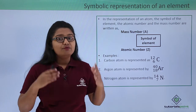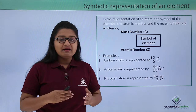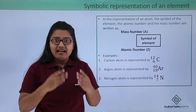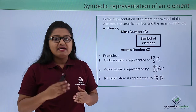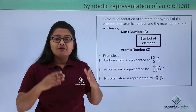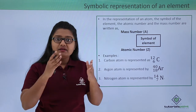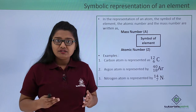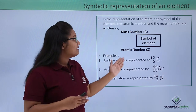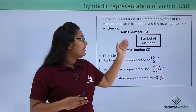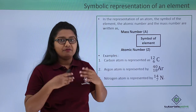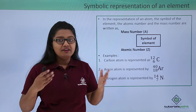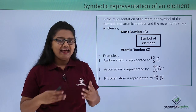In this video, we have learnt that the atomic number is the total number of protons present inside an atom, and the mass number represents the total number of nucleons, that is the sum of the number of protons and neutrons inside an atom. We also learnt how to symbolically represent the atomic number and the mass number of an atom along with the symbol of the element. I hope you all had fun learning this lesson. Thank you.